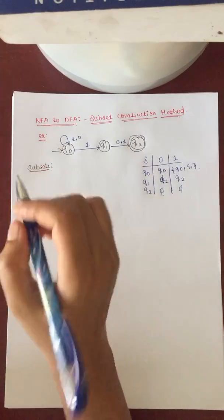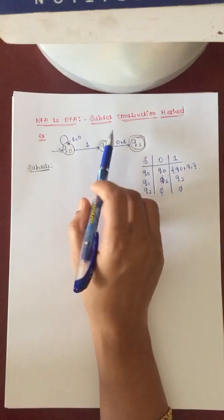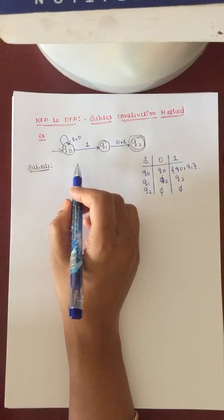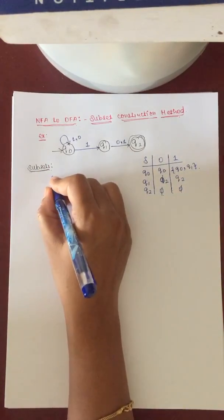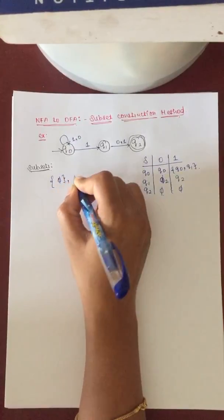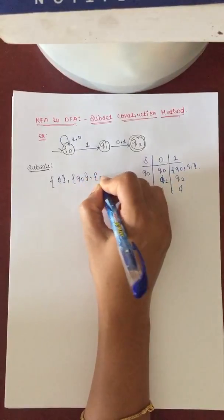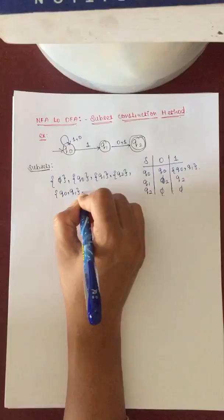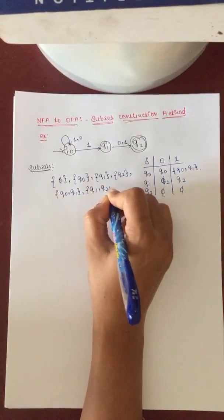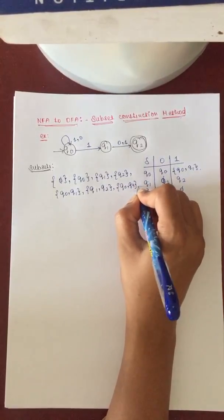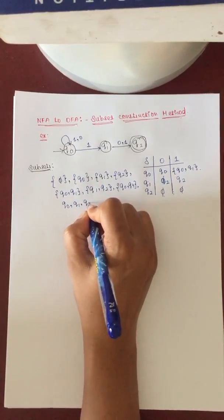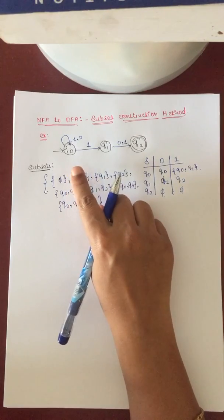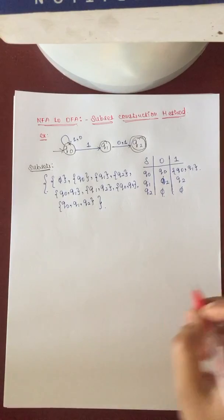The initial step — Step 1 — is to generate a subset for all these states, because the method we are using to convert NFA to DFA is the subset construction method. So the first step is to generate all the possible subsets. It should always start from null, then Q0, Q1, Q2, then {Q0,Q1}, {Q1,Q2}, {Q0,Q2}, and {Q0,Q1,Q2}. These are the possible subsets which can be generated with the help of these 3 states.